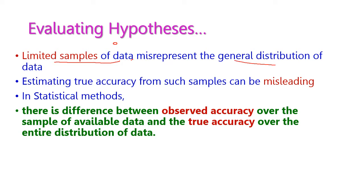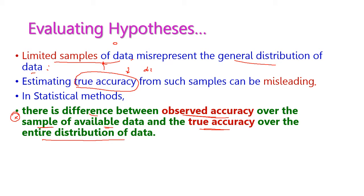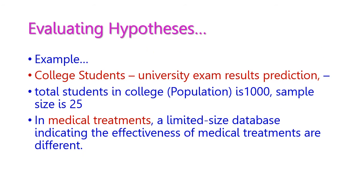If the sample size is very limited compared to the entire population, it will misrepresent the general distribution of data. Estimating true accuracy from such samples can be misleading. There is a difference between observed accuracy — taken over available sample data — and true accuracy — taken from the entire distribution. These two will differ when the sample size is very small.